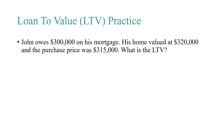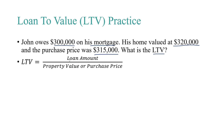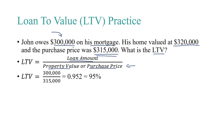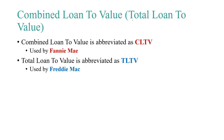Let's do an example. John owes $300,000 on his mortgage. His home is valued at $320,000 and the purchase price was $315,000. What is his LTV? The loan amount is $300,000. The lower of the property value or the purchase price is the purchase price at $315,000. So we get $300,000 divided by $315,000, which equals 0.952, or 95% LTV for John's mortgage.